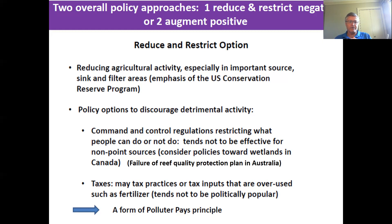The Conservation Reserve Program is quite a large program and has been around a long time. So that first option is to reduce and restrict. We can have regulations — pass laws or bylaws to say what people can or can't do. That tends to be much more effective for point sources like a feedlot than for non-point sources like a general agricultural use.